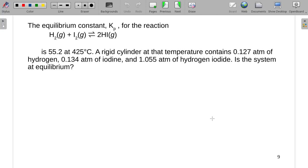The equilibrium constant Kp for the following reaction is 55.2 at 425 degrees Celsius. A rigid cylinder at that temperature contains 0.127 atmospheres of hydrogen, 0.134 atmospheres of iodine, and 1.055 atmospheres of hydrogen iodide. We want to know if the system is at equilibrium.